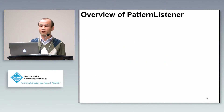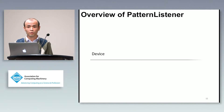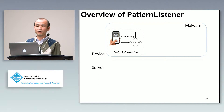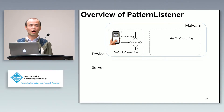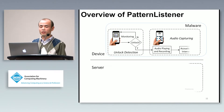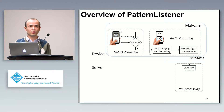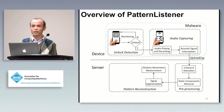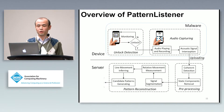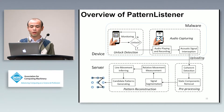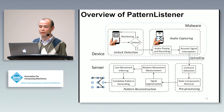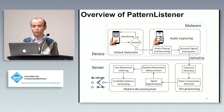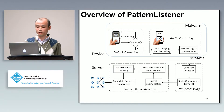Here is the outline of our technique. First, when the malware is installed on the victim phone, it basically detects the unlock behavior of the user. After that, it will generate acoustic signals, record the signals reflected by the fingertips, and upload the signal to a server so that the server can analyze the signals to recover the pattern lock of the users.